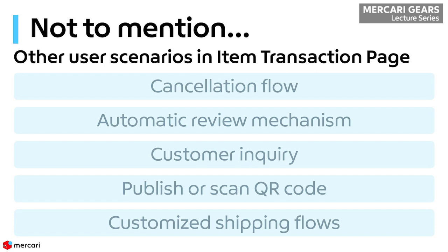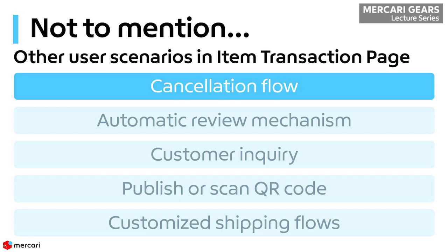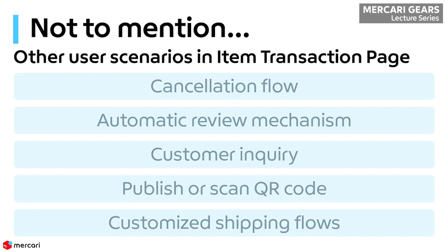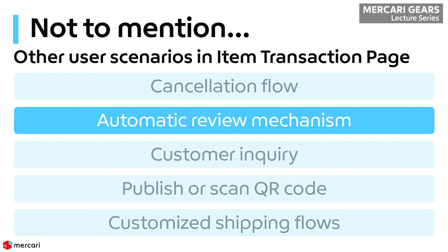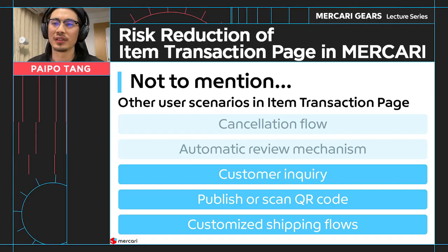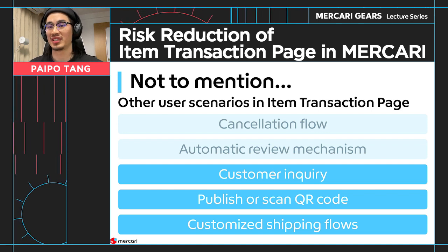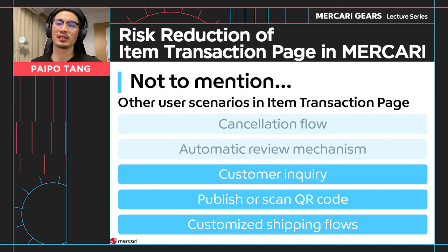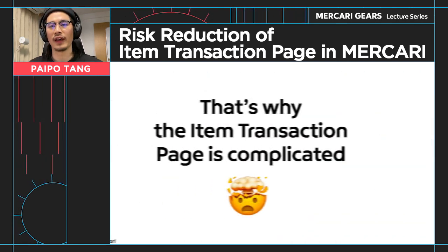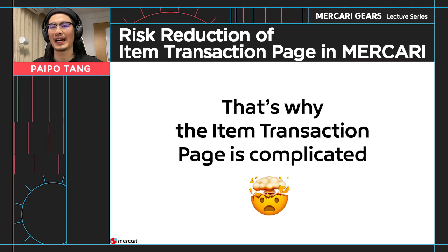Not to mention, we have other user scenarios to deal with in the item transaction page. For example, when either buyer or seller wants to cancel the transaction, there is a cancellation flow. Also, because mutual review between buyers and sellers is considered an important user experience within Medi-Kali's app, we designed an automatic review mechanism to facilitate this process. We also handle other things such as customer inquiries, and when sellers ship the item, they may need to publish or scan a QR code within the item transaction page. Add everything up, it makes quite a complicated item transaction page.